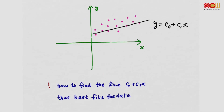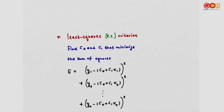The line has coefficients c0 and c1. How can we find c0 and c1 so that it best fits the data? To define what 'best' means, we need a criterion. A very commonly used criterion is the least squares criterion, abbreviated LS. With the least squares criterion, we find c0 and c1 that minimize the sum of squares.